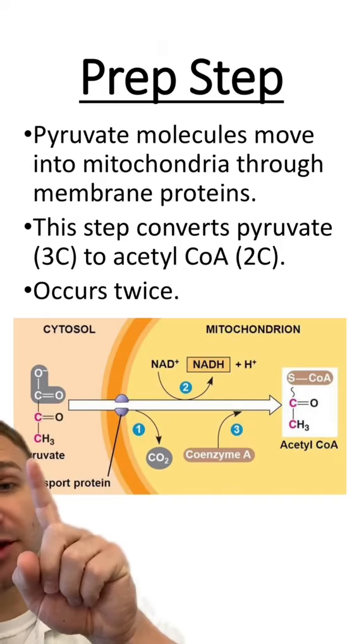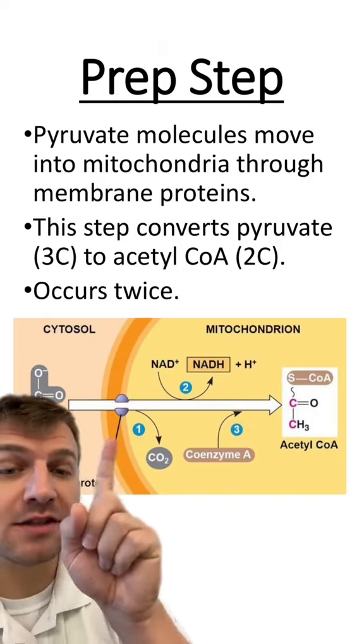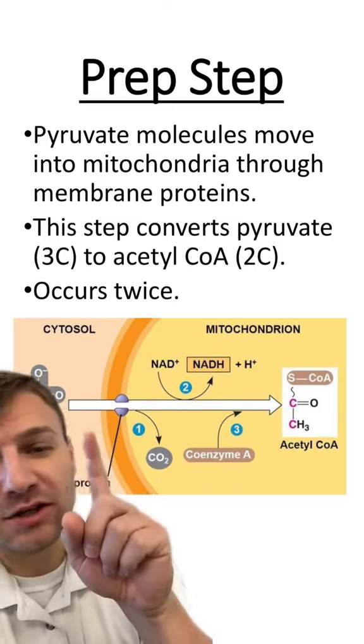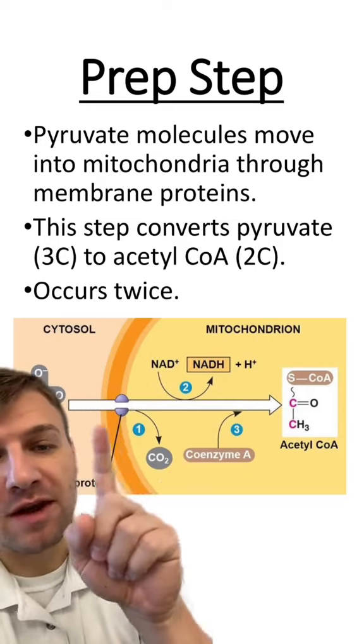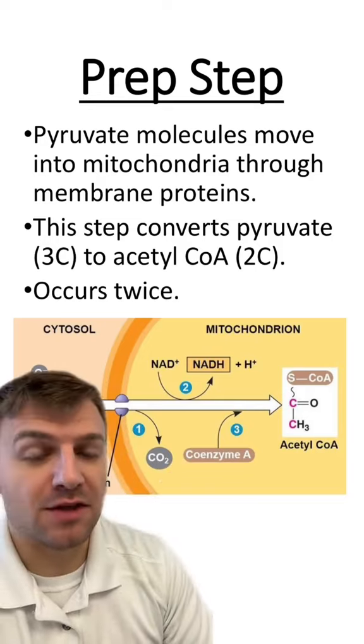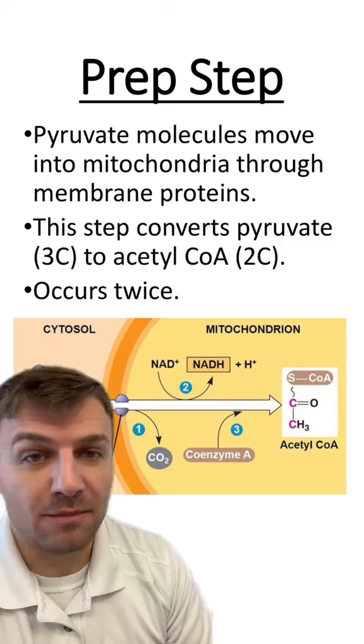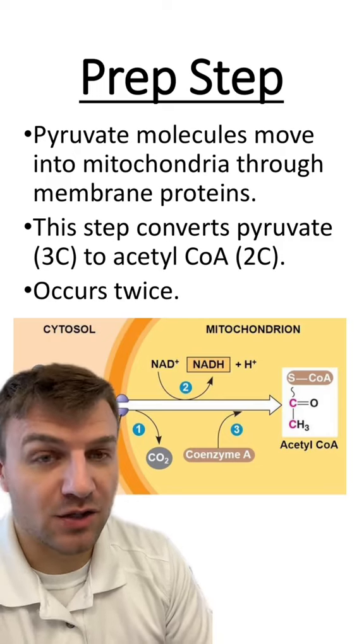Before this step can occur, pyruvate is going to make its way into the mitochondrial matrix by going through membrane proteins within the inner and outer membrane of the mitochondria.